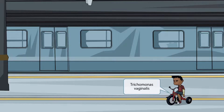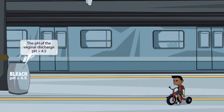Our Trichomonas vaginalis story takes place outside a metro station. This poor boy is super bored waiting for his babysitter. He's on a tricycle and he's moaning with boredom — trike and moaning for Trichomonas, as in Trichomonas vaginalis.